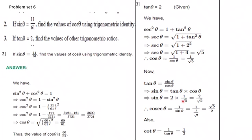Substituting tan theta equals 2 and cos theta equals 1 upon root 5, sin theta equals tan theta into cos theta, which gives 2 upon root 5. Cosec theta is 1 upon sin theta, so it is 1 upon 2 upon root 5 — division changes to multiplication — giving root 5 upon 2. And cot theta is 1 upon tan theta, so cot theta is 1 upon 2. These are all the trigonometric ratios.